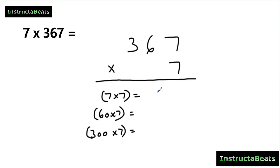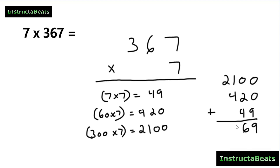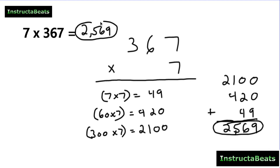Now I just solve each of those partial products: 7 times 7 is 49; 60 times 7 is 420; 300 times 7 is 2100. I'll rewrite all my partial products neatly to make sure place values are lined up — the hardest part about math is being neat. When I add my partial products back together, I see that the product of 7 times 367 is 2,569. Using partial products is a great way to multiply bigger numbers.